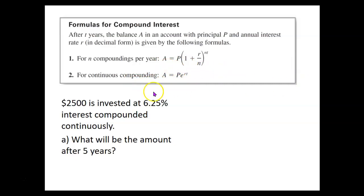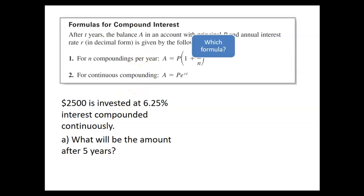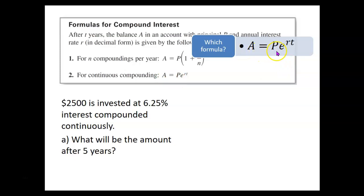Let's work through some examples. $2,500 is invested at 6.25% interest, compounded continuously. What will be the amount after five years? Since it says compounded continuously, we want the formula for continuous compounding: A = P·e^(rt).